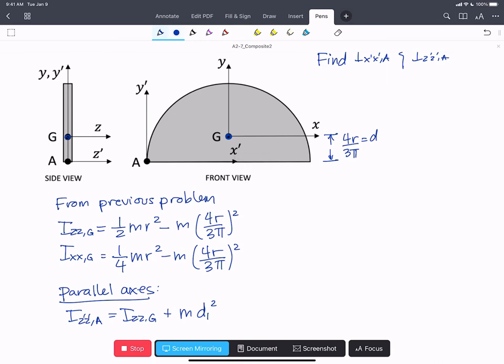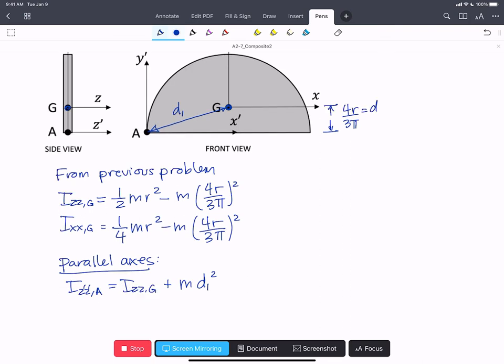So if we look at our figure here, this is going to be D1. So we can express D1² as (4r over 3π)².